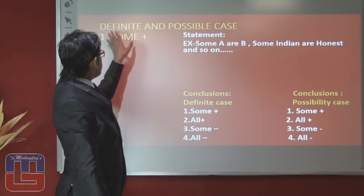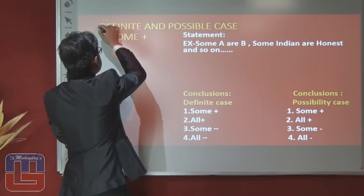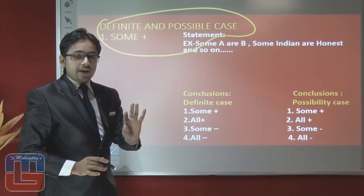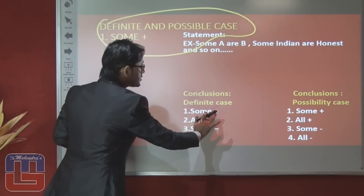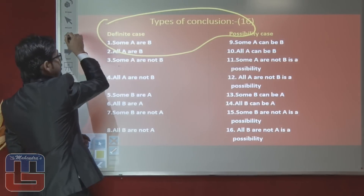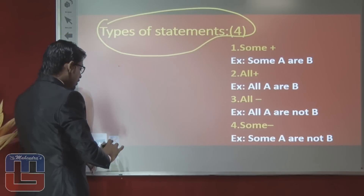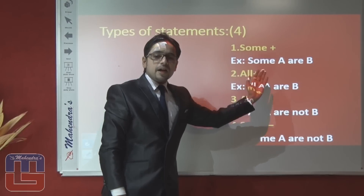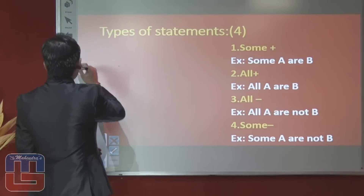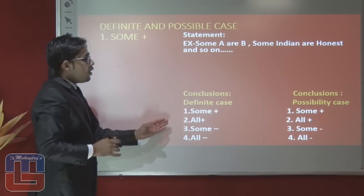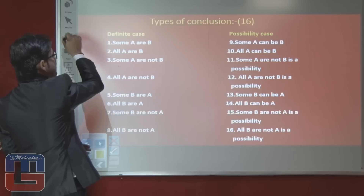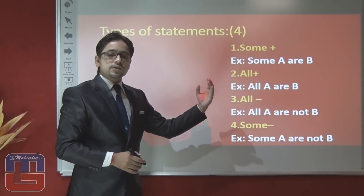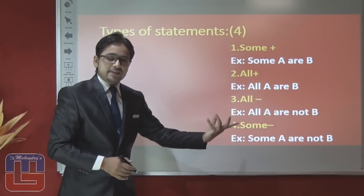Let's look at the definite and possible cases together for 'some positive.' Some positive means a statement like 'some A are B,' such as 'some pen are pencil' or 'some 1 are 2.' All positive means a statement like 'all A are B,' such as 'all pen are pencil,' 'all Indians are honest,' or 'all K are Z.'